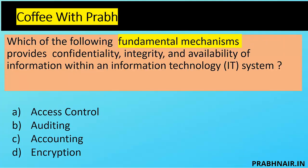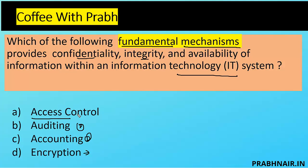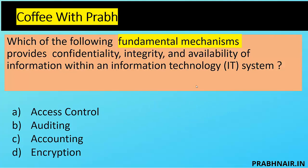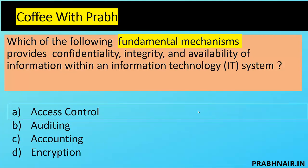Third coffee shot: which of the following fundamental mechanisms provides confidentiality, integrity, and availability of information within an IT system? As an architect looking for something fundamental to achieve CIA — auditing is only a detective mechanism, accounting is a detective mechanism, and encryption only addresses confidentiality. Access control covers CIA: it ensures a file is only available to authorized users (confidentiality), protects against unauthorized modification (integrity), and ensures data is available only to authorized users (availability). The answer is A — access control.